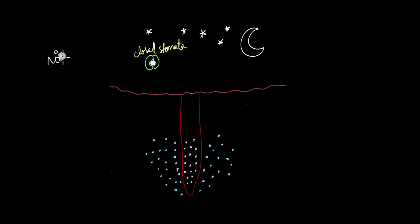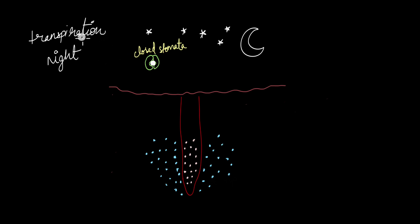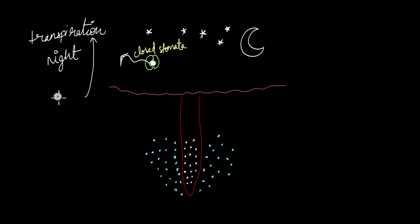Root pressure is generated at night, especially when the stomata on the leaves are closed. Stomata are tiny pores through which plants perform gas exchange, and apart from gas exchange, stomata are the location for transpiration — where water evaporates from the surface of the leaves. As transpiration happens, it creates a negative pressure inside the plant which pulls water and nutrients up against gravity, much like sucking water or juice up through a straw.